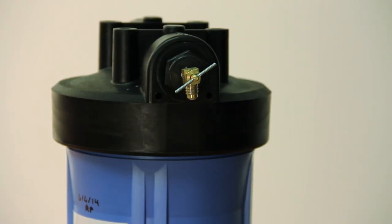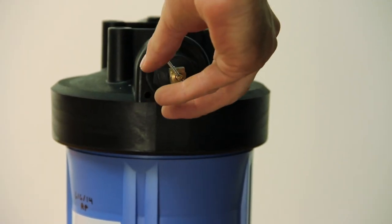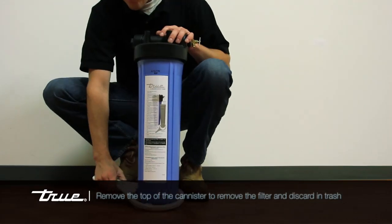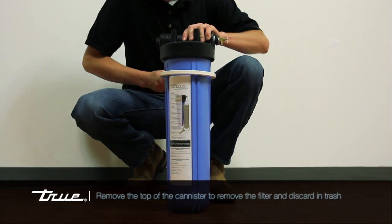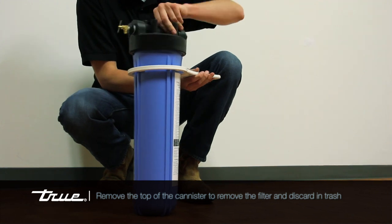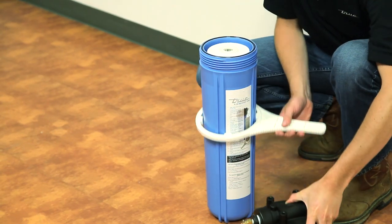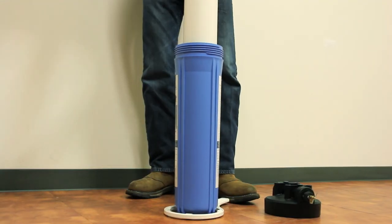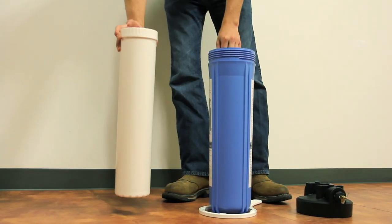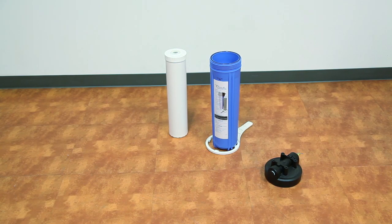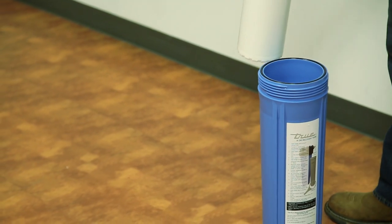To replace the filter cartridge, open the needle valve to let the pressure equalize. Using the filter wrench, remove the top of the tank and discard the filter. Install the new filter and tighten the top.